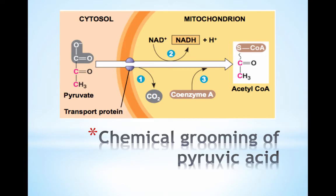Pyruvic acid diffuses from the cytoplasm into the mitochondria after glycolysis. Pyruvic acid undergoes major chemical grooming before it enters the Krebs cycle. It is oxidized while a molecule of NAD+ is reduced to NADH. A carbon atom is removed and released as CO2. Coenzyme A, derived from a B vitamin, joins with the two-carbon fragment to form acetyl coenzyme A. These grooming steps set up the second stage of cellular respiration.